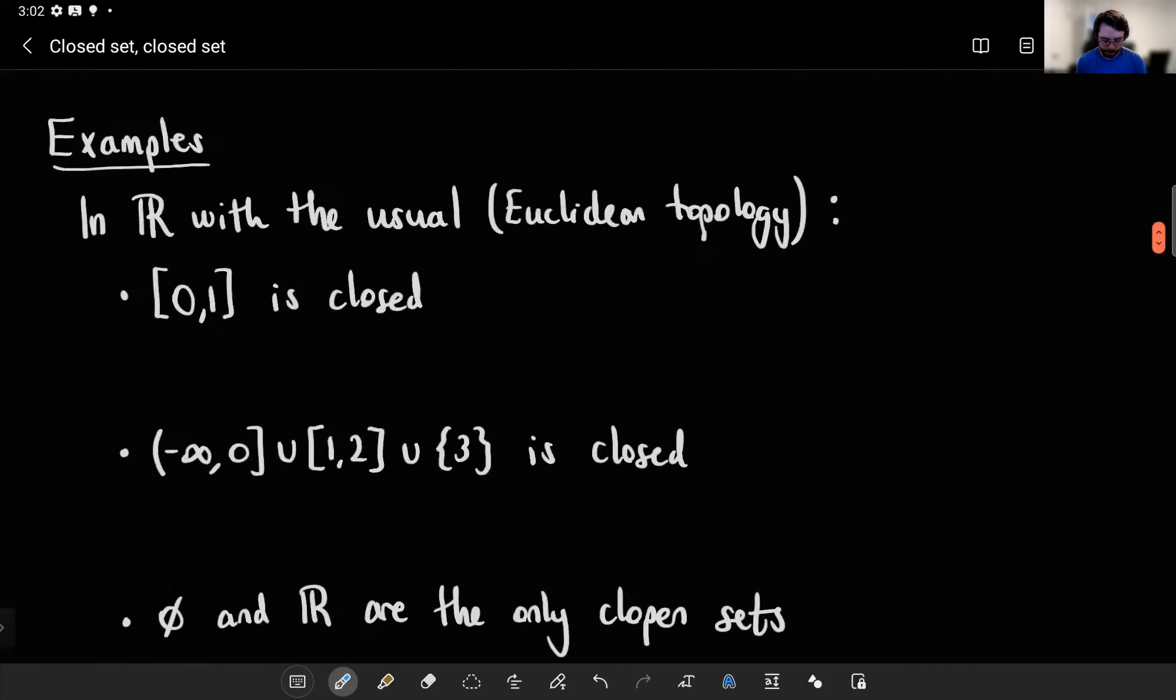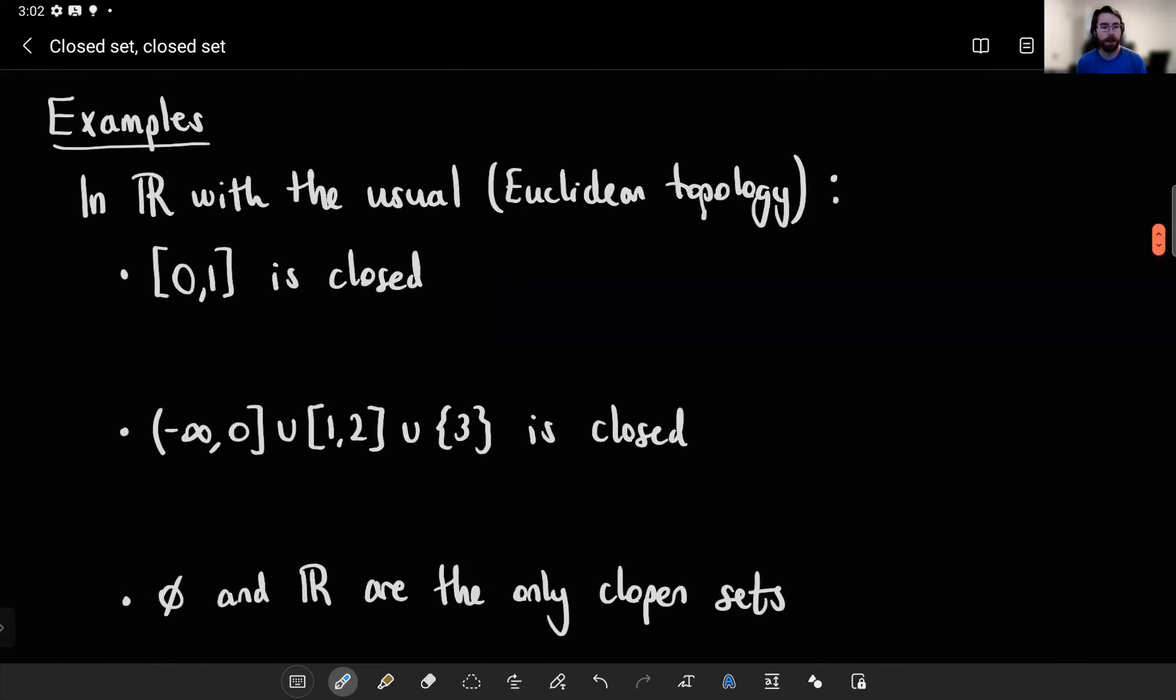So let's see some examples. In R with the usual topology - and when I say usual, I mean Euclidean, like we're treating it as a metric space with the Euclidean metric - then the closed interval from 0 to 1 is closed according to this definition and according to the definition you're used to from real analysis.